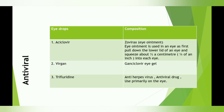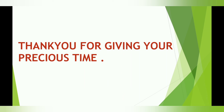The antiviral medications are acyclovir, Virgan, and trifluridine. Acyclovir is used as an eye ointment — pull down the lower lid of the patient's eye and squeeze about half a centimeter into each eye. Virgan is also an acyclovir eye gel. Trifluridine is the most important antiviral as most patients come with herpes virus — it is the anti-herpes drug that is used primarily on the eye. Hope you all understand about these things, and thank you so much for your precious time.